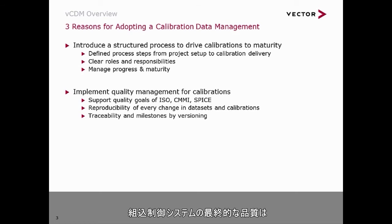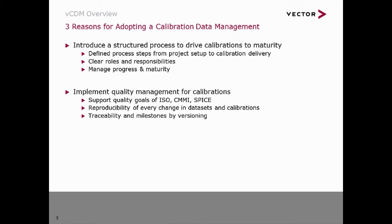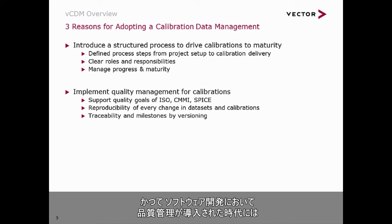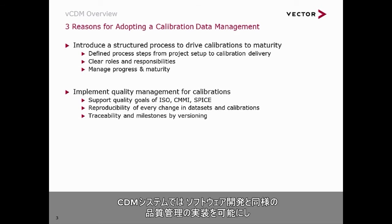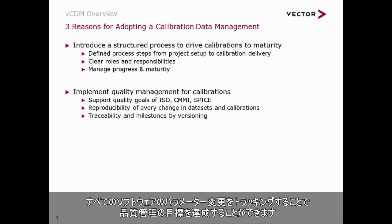The final quality of an embedded control system is determined by its software quality and by its calibration quality. While software development adopted quality procedures long ago, the same diligence is often neglected for calibrations. A CDM system enables you to implement the same quality procedures as for your software development. Tracking changes of every single parameter across all software versions helps to achieve this goal.